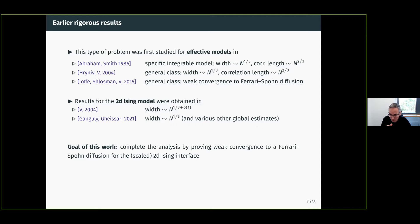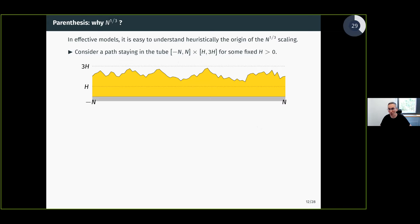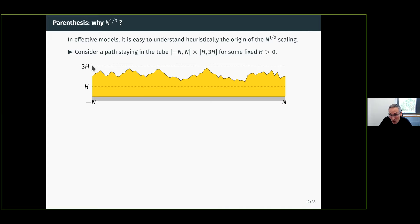The goal of the work I am presenting today is to complete the analysis by generalizing the results obtained with Dima and Senja for effective models to the two-dimensional Ising model. Before moving to that, let me briefly explain where the N^(1/3) exponent comes from, at the heuristic level.